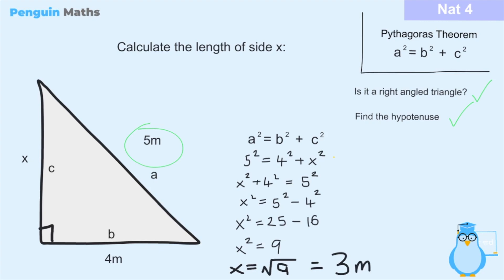So x is equal to 3 meters, because 3 times 3 equals 9, therefore 3 is the square root of 9. We can replace x in our diagram with 3 meters. That's how you use Pythagoras to solve the length of one side in a right angle triangle.